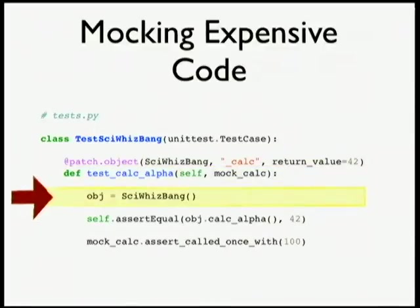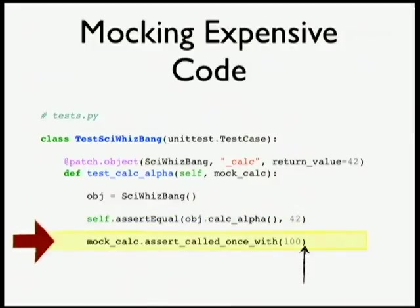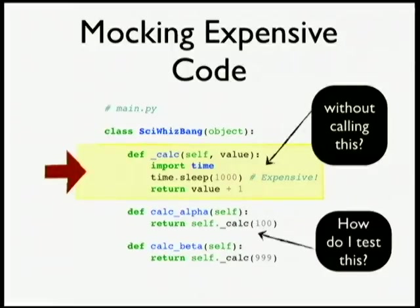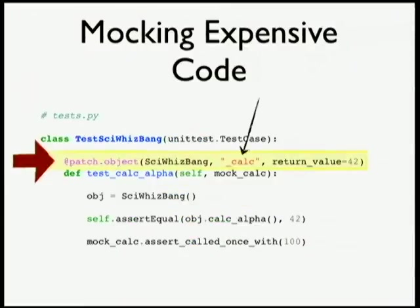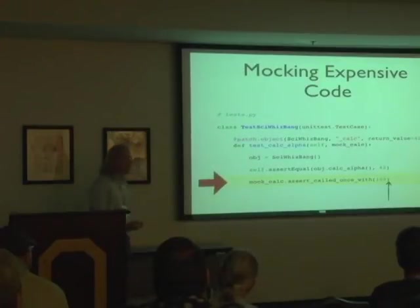That way I have a reference to it. At the end of my test, I can make assertions about how it was used. I create an instance of my scientific whiz-bang, I call my calc_alpha method, and because I patched calc and I know what it returns, I can make assertions that it returned what I expected. But then I can also test that the internal method was called with specific parameters — calc_alpha calls this with 100 as a parameter.